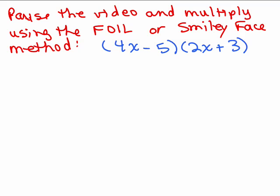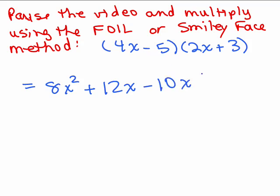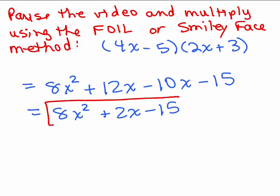It's your turn — pause the video and multiply using the FOIL or smiley face method, or both, or try the box or vertical method; all should give the same answer. Using FOIL on 4x minus 5 times 2x plus 3: 4x times 2x is 8x squared, 4x times 3 is plus 12x, negative 5 times 2x is negative 10x, and negative 5 times 3 is negative 15. Adding the like terms gives 8x squared plus 2x minus 15.